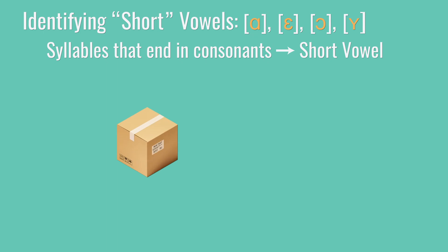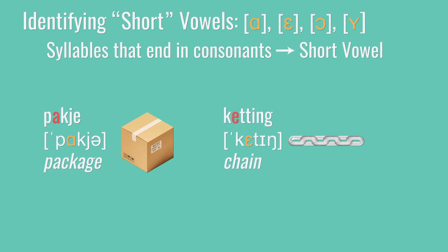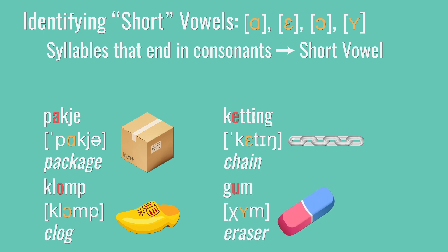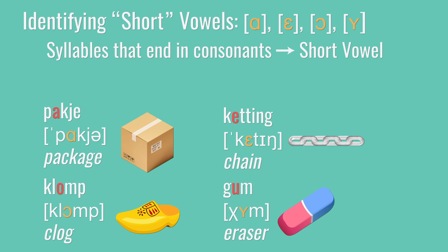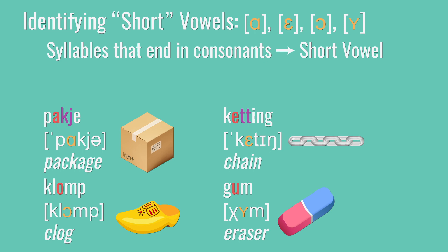That's easy to spot when you have one-syllable words like sla and stro — there's no consonant at the end, so it must end in a vowel, so it's long. But bezem and juweel are a little trickier. How do you know it's not bezem and juweel? Figuring this out is mostly a matter of counting consonants. If you just see one consonant after a vowel and that consonant is followed by another vowel, like in bezem and juweel, then that consonant is going to be part of the next syllable, not the first one. So the syllables in these words are be-zem and ju-weel.